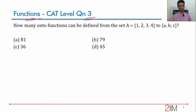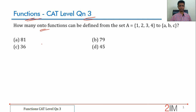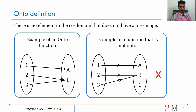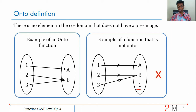This is a CAT-level question: find how many onto functions can be defined from the set {1, 2, 3, 4} to the set {a, b, c}. You should know what an onto function means — onto, one-to-one, surjective, injective, bijective. Let me quickly revisit: a function is onto if every element in the co-domain has a pre-image. If even one element in the co-domain is not mapped from anything, it is not an onto function.